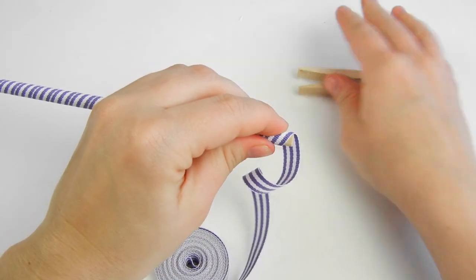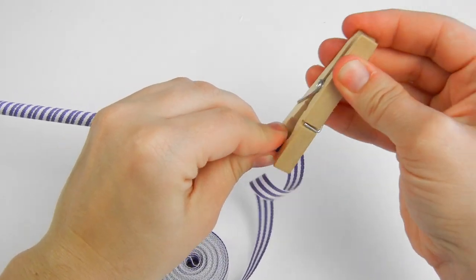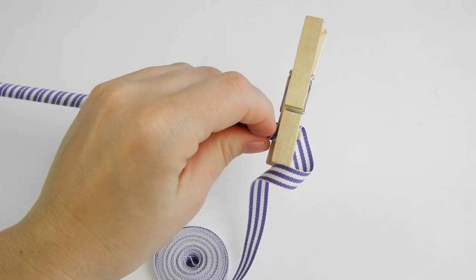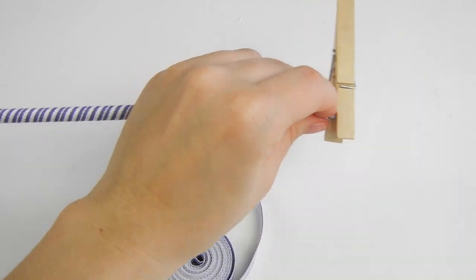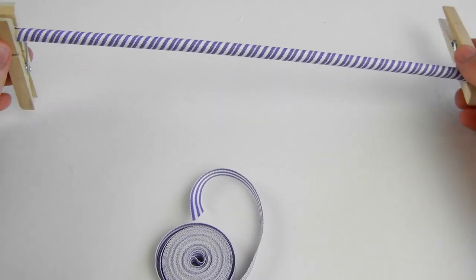Just pin the end of your ribbon with your clothespin, and then cut off the end of the ribbon. Your ribbon is now ready for baking.